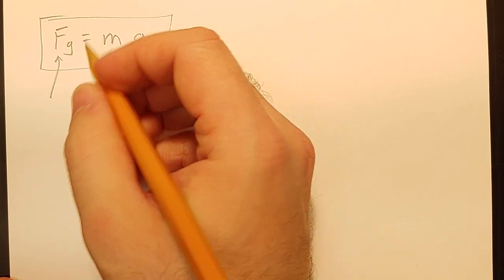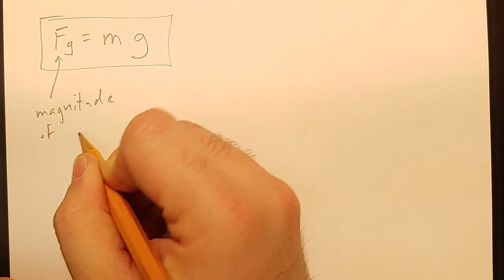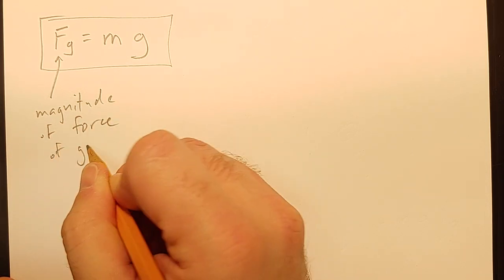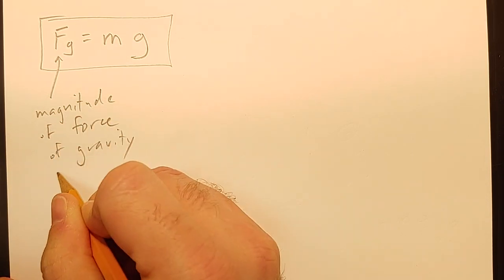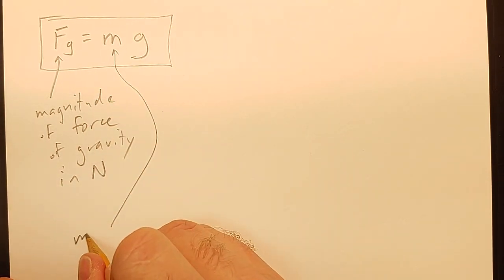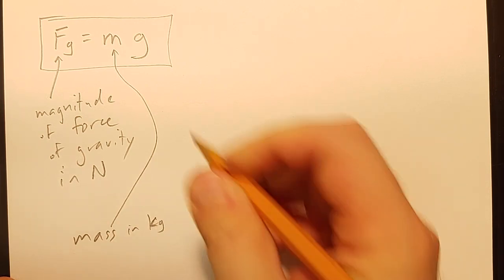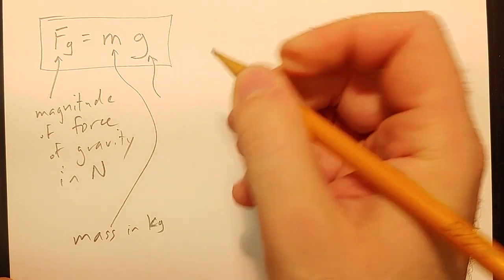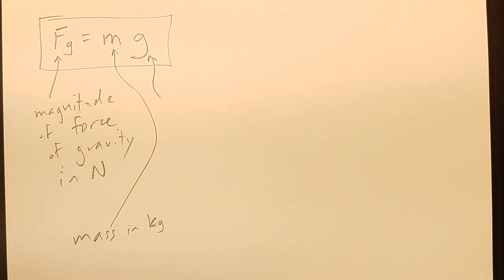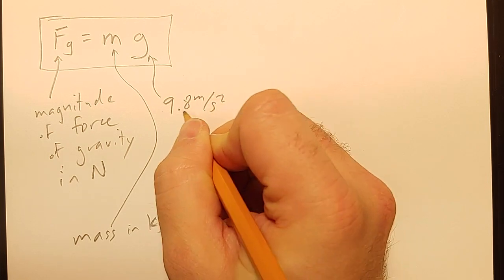So you'll notice there's no vector sign here, so this is the magnitude of the force of gravity. And this is going to be in newtons. M is the mass in kilograms. And G is the free-fall acceleration due to gravity, which is just 9.8 meters per second squared.